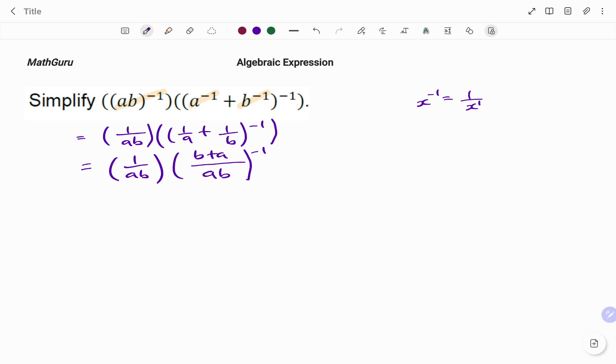I'm going to flip what I have. That is one over ab close bracket, and bracket ab over b plus a. What I've done is if I have b plus a over ab, raised to negative one, is the same as one divided by...